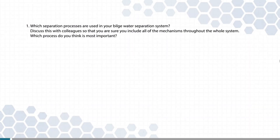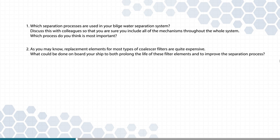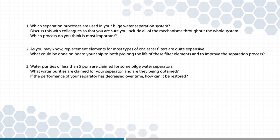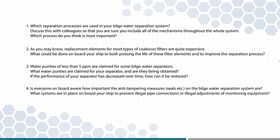Which separation processes are used in your bilge water separation system? Discuss this with colleagues to ensure you include all of the mechanisms throughout the whole system. Which process do you think is most important? Replacement elements for most types of coalescer filters are quite expensive — what could be done on board to prolong the life of these filter elements and improve the separation process? Water purities of less than 5 ppm are claimed for some bilge water separators — what purities are claimed for yours, and are they being obtained? If separator performance has decreased, how can it be restored? Is everyone on board aware of how important the anti-tampering measures and seals are? What systems are in place to prevent illegal pipe connections or illegal adjustments of monitoring equipment?